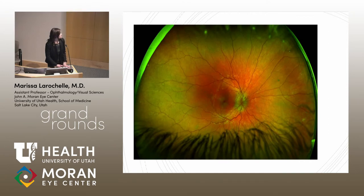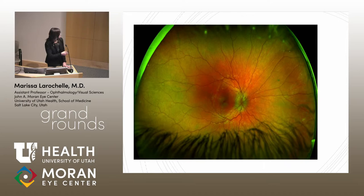On the Optos photo of the right eye, we can note marked optic nerve swelling with some peripapillary hemorrhages. There are a few small hypopigmented chorioretinal lesions in the macula. This patient indeed has pan-uveitis: anterior chamber inflammation, vitritis, and chorioretinal inflammatory lesions.